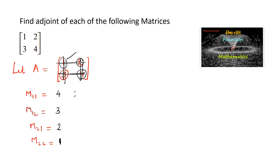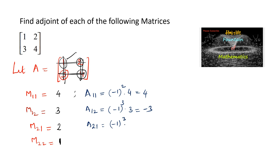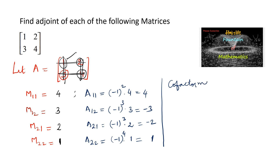And the cofactors we can write: A11 is equal to (-1) to the power of 1+1 times minor m11, which is 4. A12 is equal to (-1) to the power of 1+2 times minor m12 which is 3, that is negative 3. A21 is equal to (-1) to the power of 2+1 times m21 which is 2, giving negative 2. And A22 is equal to (-1) to the power of 2+2 times minor m22 which is 1, so we get 1. Therefore the cofactor matrix of A is equal to [4, -3, -2, 1].